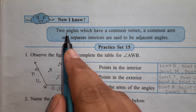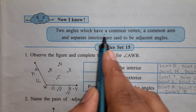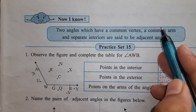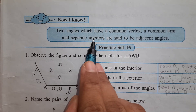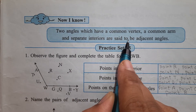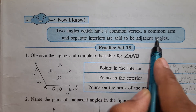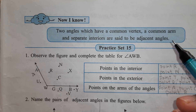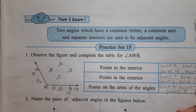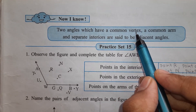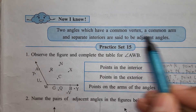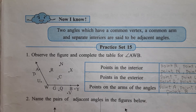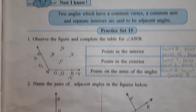So which are adjacent angles? Two angles which have a common vertex, a common arm and separate interiors are said to be adjacent angles. Three things to remember for adjacent angles: common vertex, common arm and separate interior.